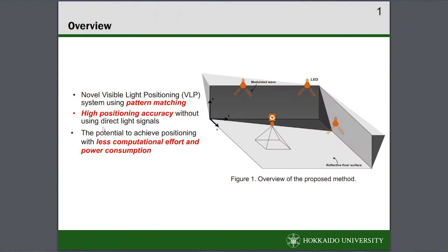Figure 1 shows the overview of our proposal. Our proposal is a novel visible light positioning system using pattern matching. It can achieve high positioning accuracy without using direct light signals and has the potential to realize positioning with less computational effort and power consumption.